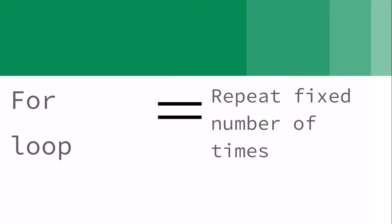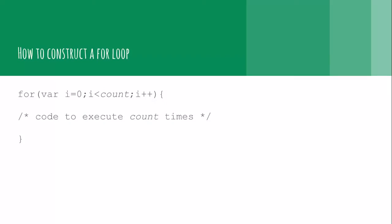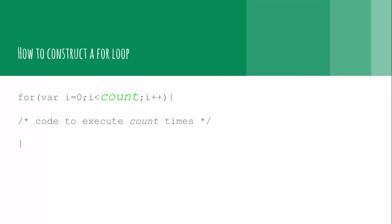Let me repeat that: with a for loop you can repeat a section of code for a fixed number of times. This is how you construct a for loop: for parentheses, var i equals zero, semicolon, i is less than count — however many times you want to repeat it — semicolon, i plus plus, then an opening bracket, put your code inside it, and a closing bracket. That's a lot to remember, but basically the only thing that's really important is the count part.